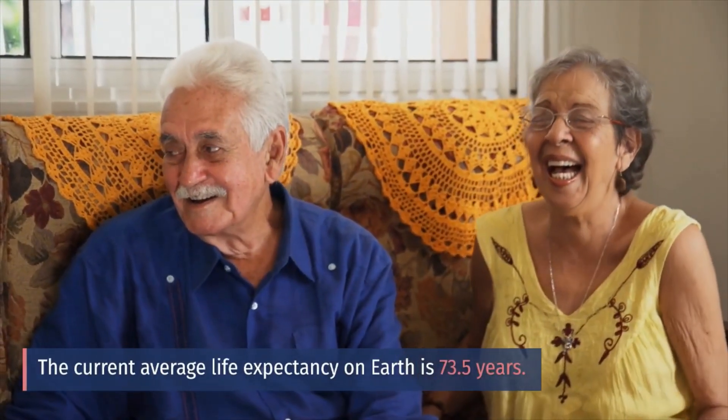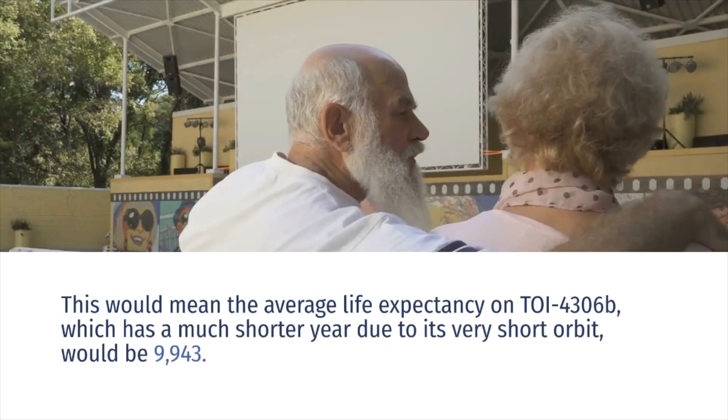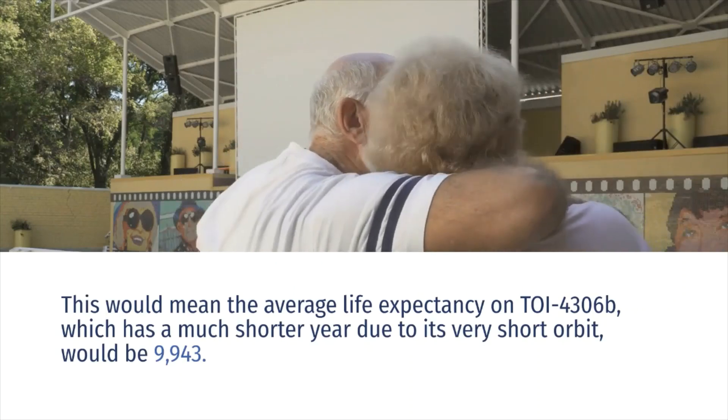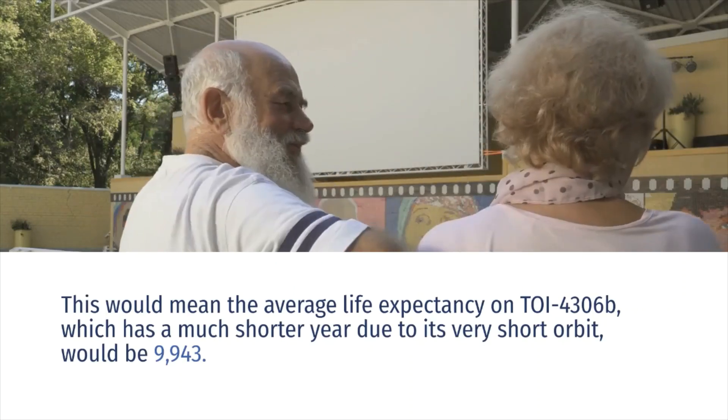The current average life expectancy on Earth is 73.5 years. This would mean the average life expectancy on TOI-4306b, which has a much shorter year due to its very short orbit, would be 9,943 years.